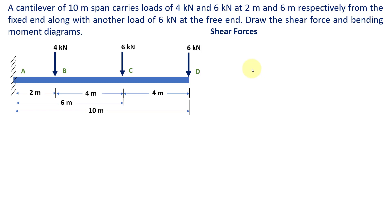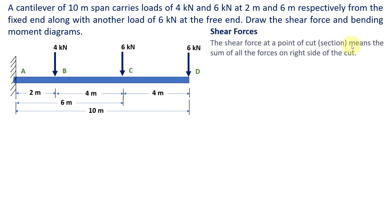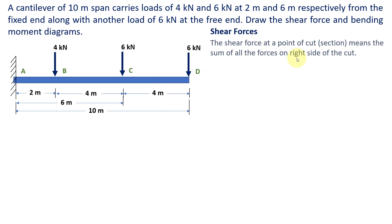Now let us see how to find out the shear forces. The shear force at a point of cut or section means the sum of all the forces on the right side of the cut. We are going to make a cut along the length of the beam and look at only the forces on the right side of the cut. As far as finding shear force is concerned, we are going to move from right to left, that is from D to A, and consider only the sum of forces on the right side of the cut.